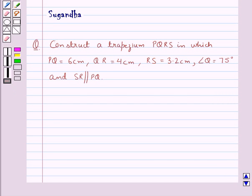Hello and welcome to the session. In this session we discuss the following question which says construct a trapezium PQRS in which PQ is equal to 6 cm, QR equal to 4 cm, RS equal to 3.2 cm, angle Q equal to 75 degrees and SR is parallel to PQ.